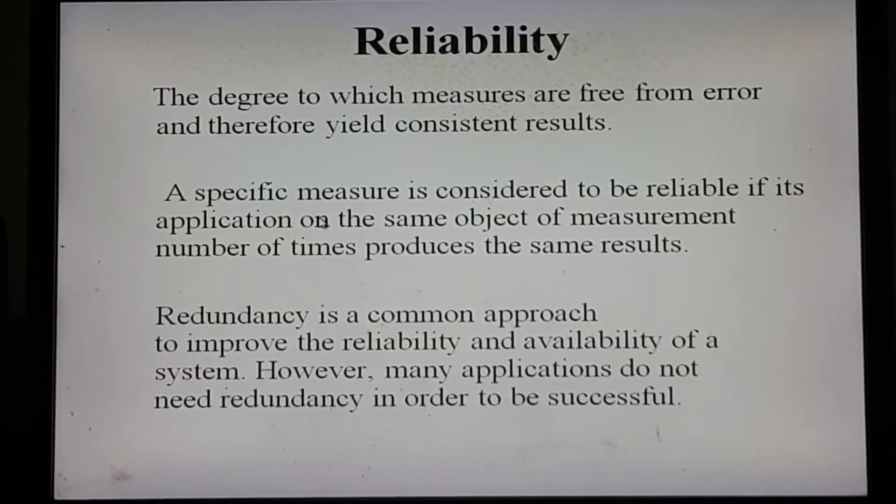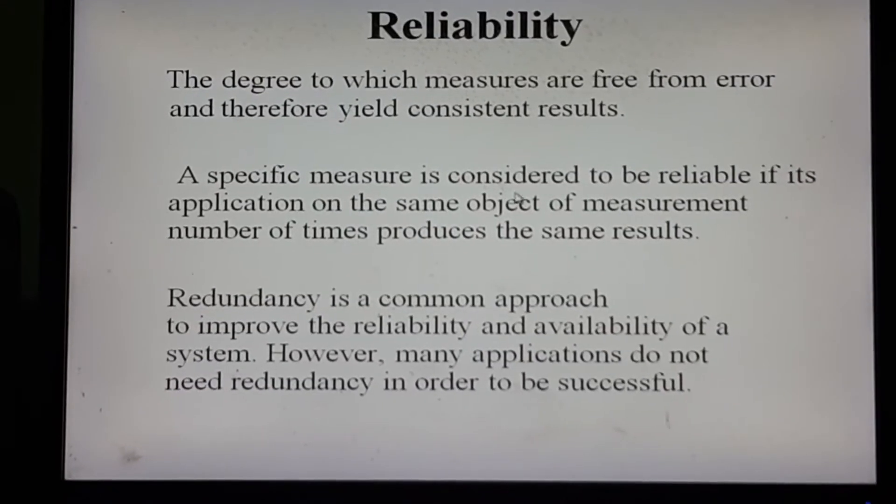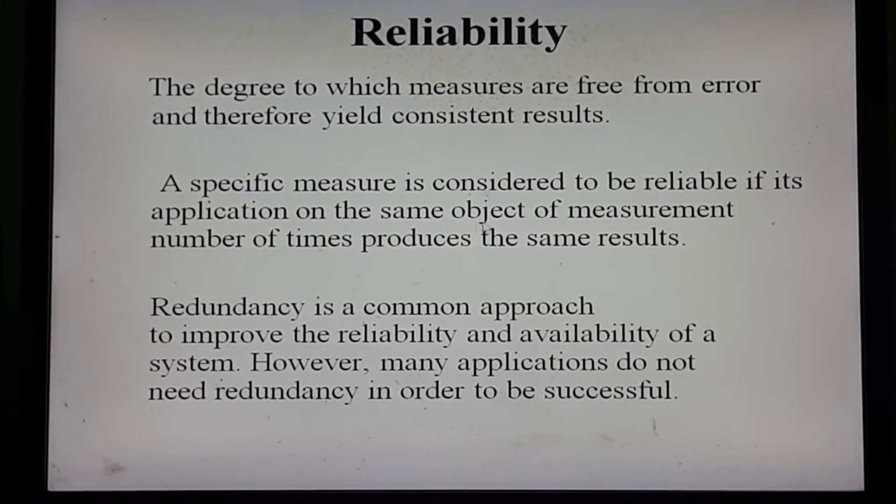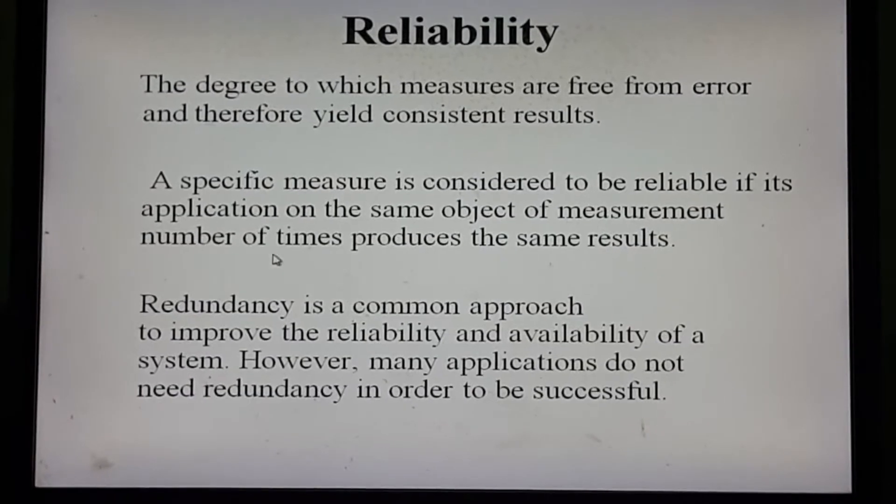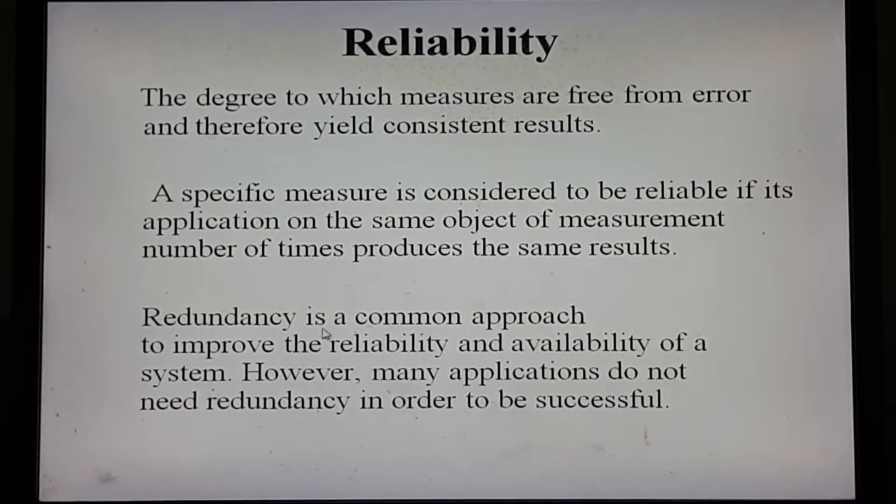The first criterion is the test of reliability. Reliability is the degree to which the measures are free from error and therefore can produce consistent results. That means the measurement instrument is free from error — a perfect instrument is designed to measure the research problem. A specific measure is considered to be reliable if its application on the same object of measurement a number of times produces the same results.